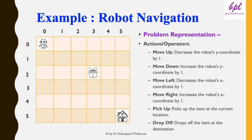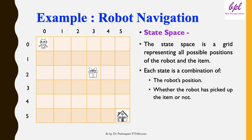Actions or operators available to the robot: Move Up decreases the y-coordinate by 1; Move Down increases the y-coordinate by 1; Move Left decreases the x-coordinate by 1; Move Right increases the x-coordinate by 1; Pick Up picks up the item at the current location; and Drop Off drops the item at the destination. The state space is a grid representing all possible positions of the robot and the item. Each state is a combination of the robot's position and whether the robot has picked up the item or not.